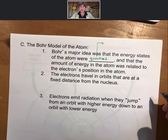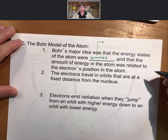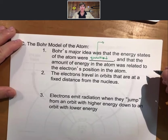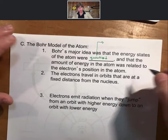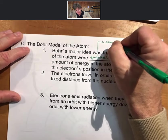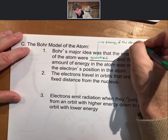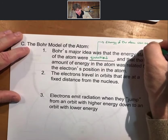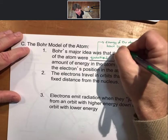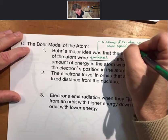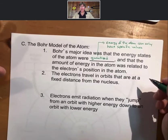Bohr's major idea was that the energy states of the atom were quantized — hence the name quantum mechanics — and that the amount of energy in the atom was related to the electron's position. Quantized means that the energy of the atom can only have specific values, not any value.